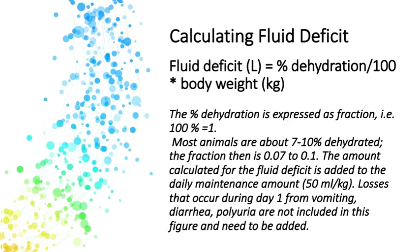The first thing you want to do is calculate the fluid deficit in an animal. Their percent dehydration times the body weight will give you a figure in liters in terms of the fluid deficit. You usually want to translate that to milliliters and then divide it up. The fluid deficit is added to a daily maintenance amount of about 50 milliliters per kilogram. If you have an animal that's vomiting or has diarrhea or significant polyuria, you want to be estimating these as well.